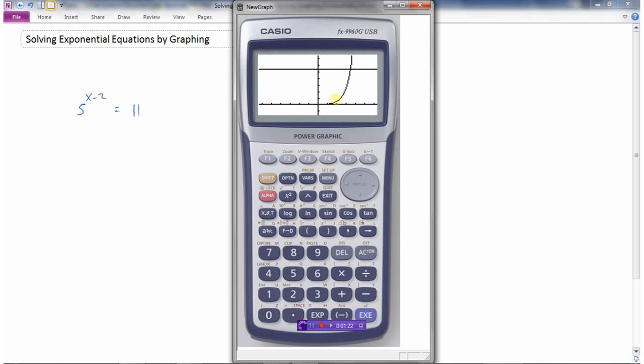Okay, so now I can see here's the graph of 5 to the power of x minus 2, and here's the line y equals 11. So you might have to play with your view windows a bit so that you can see both the functions that you're graphing.